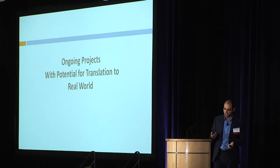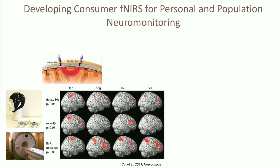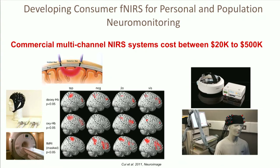What are the next steps? I'll share three projects we're working on. The first is translating this intervention to homes, because bringing kids with ADHD in for 10 sessions of neuromonitoring-guided cognitive intervention takes a lot of resources. So we're building a much cheaper NIRS system than commercially available ones that can be integrated with cognitive training and used at home.